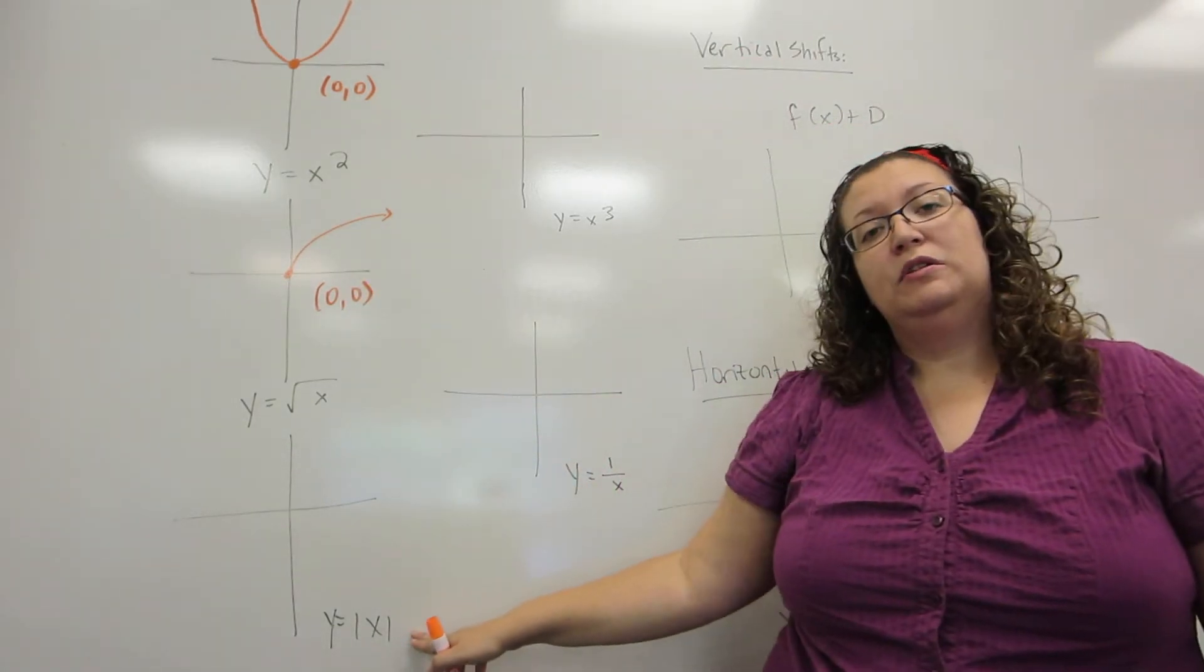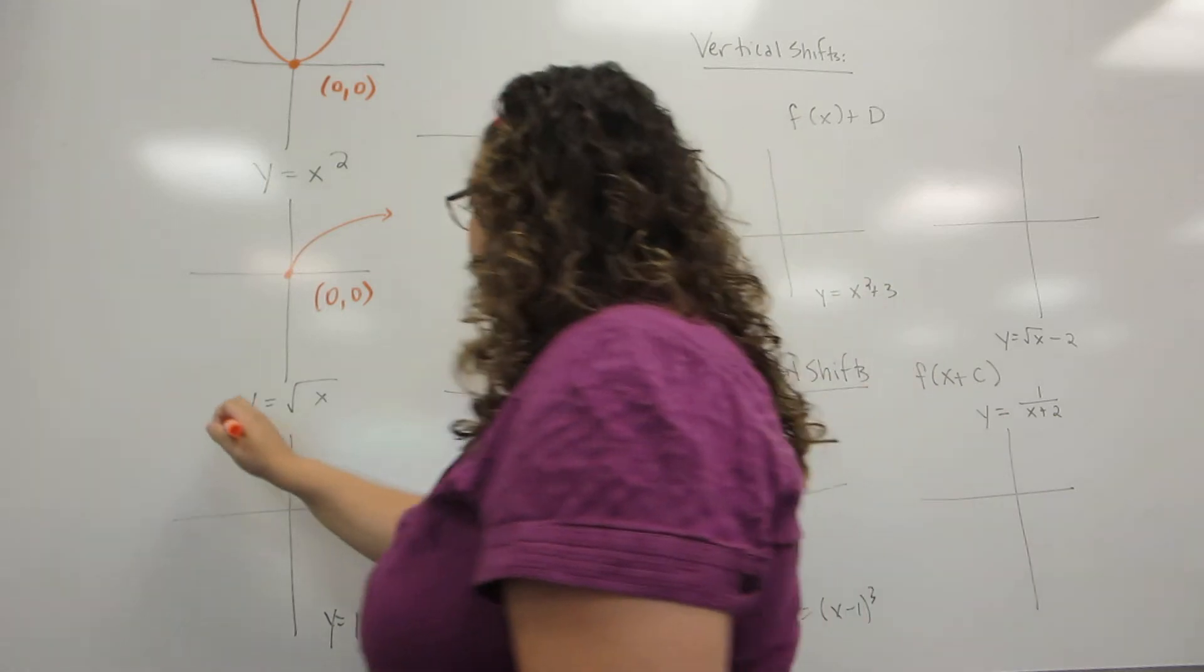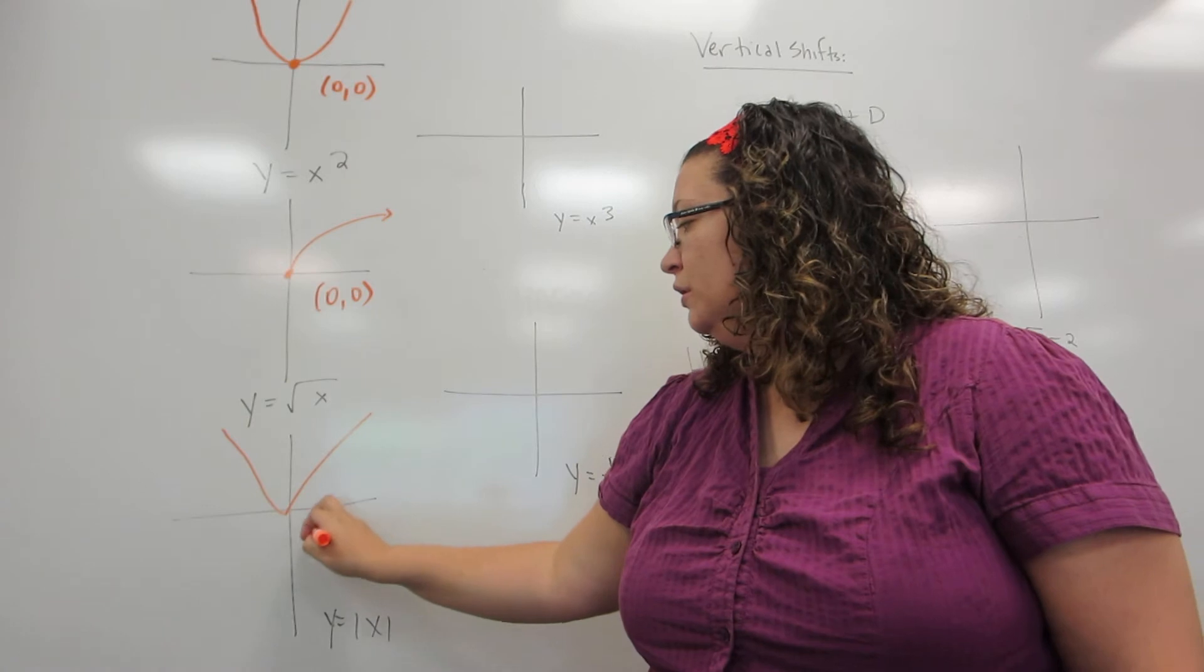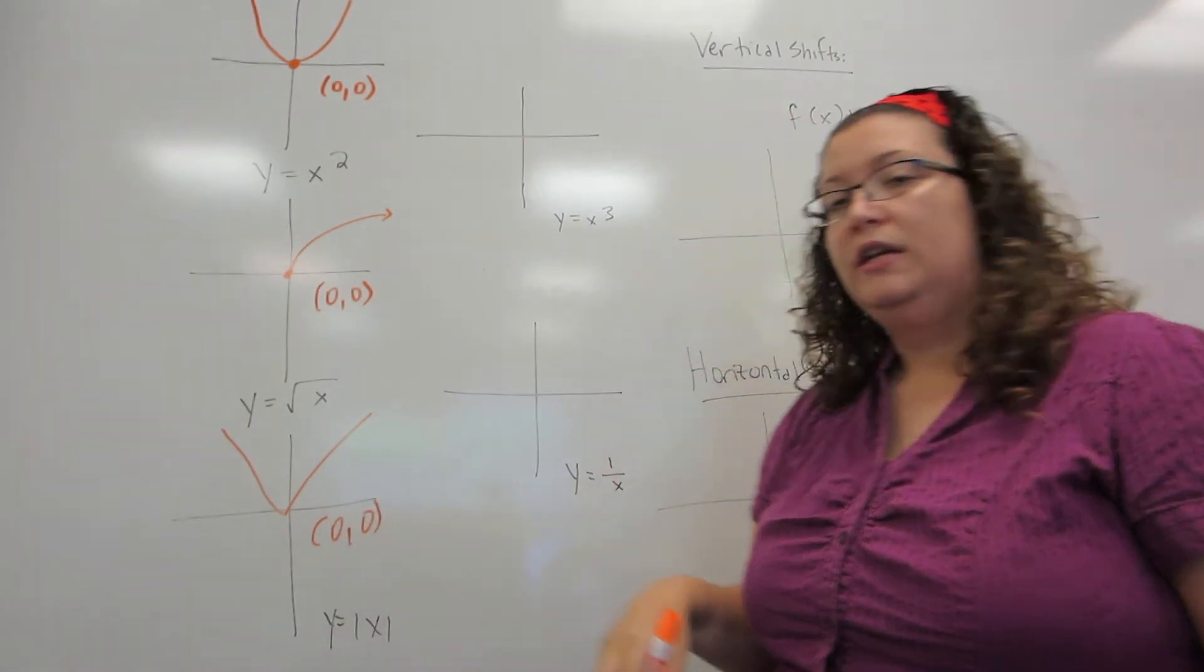Y equals the absolute value of x actually looks like a perfect v with its tip at the origin. So its most important point is that tip.